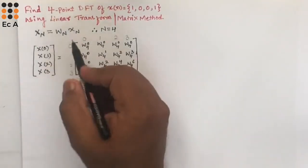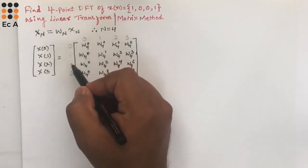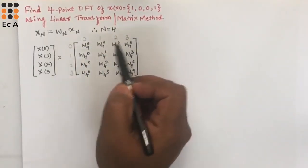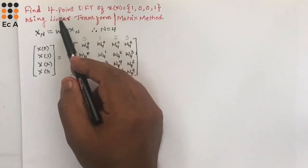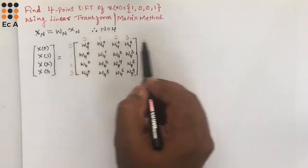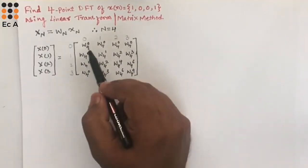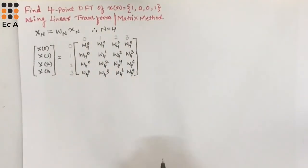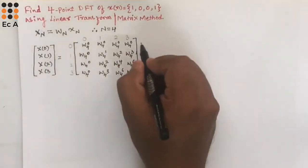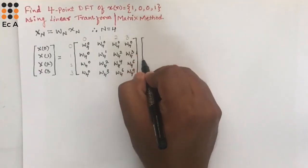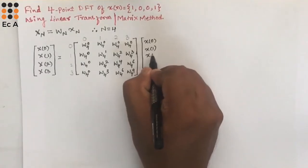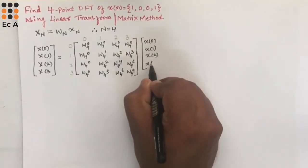If they give a 6-point DFT, you write 0 to 5 along the rows and columns. For an 8-point DFT, write 0 to 7. Just multiply those index values to get the power of W. Next, the input x(n) is the 4×1 column vector: x(0), x(1), x(2), x(3).